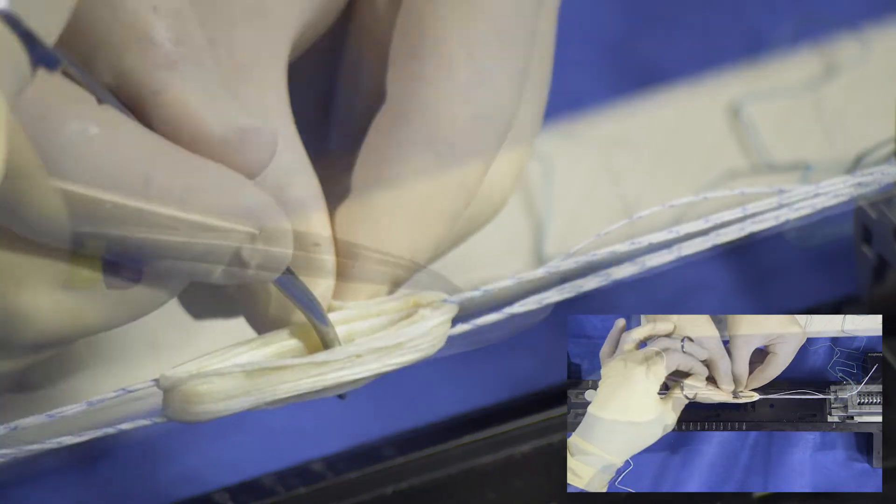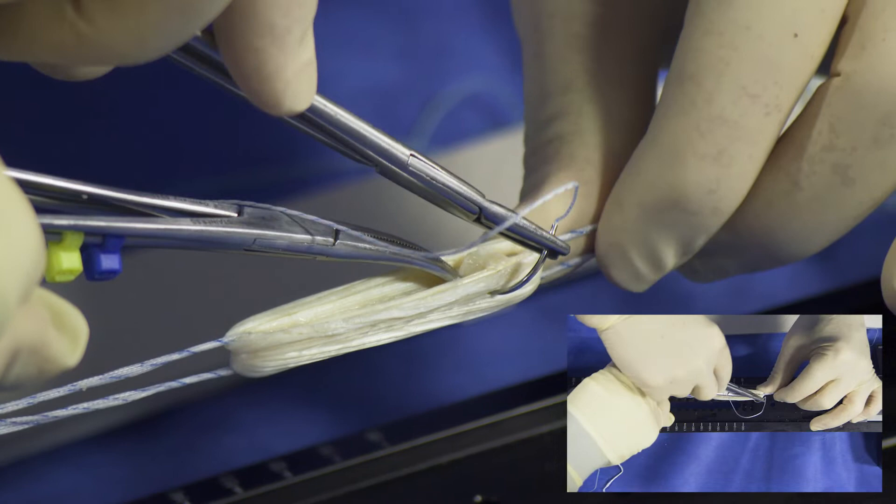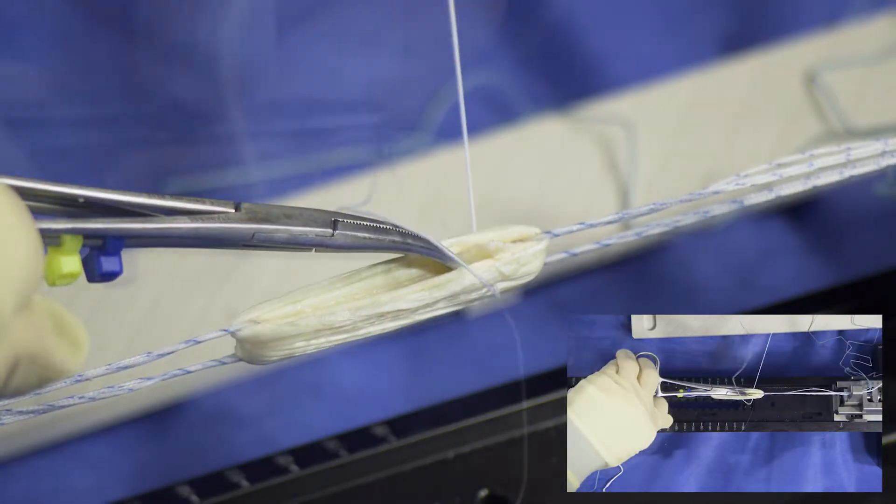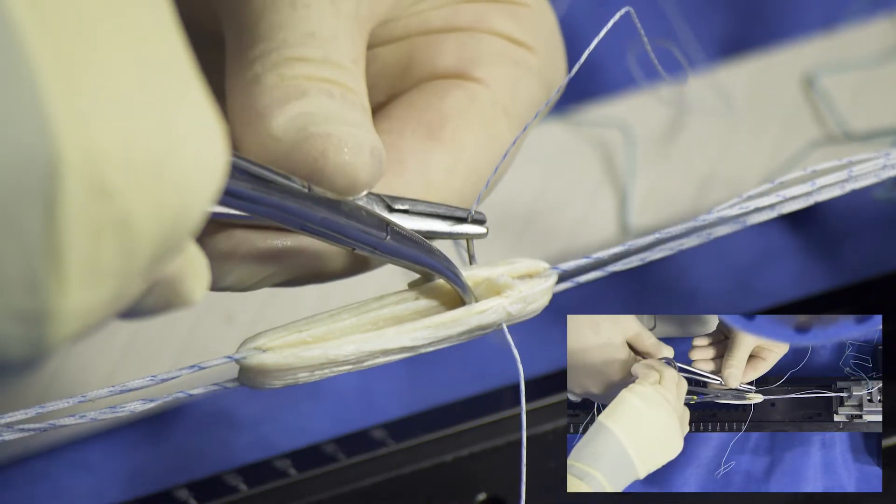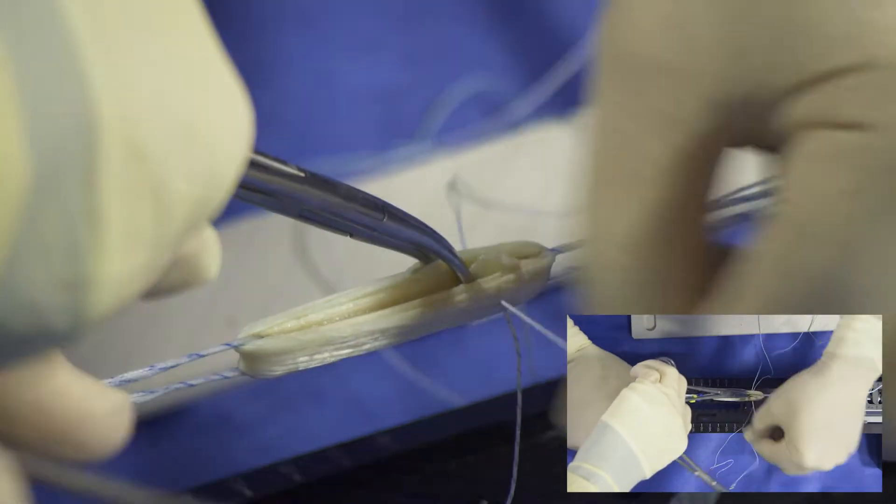The tendon is secured to itself with multiple 2-0 braided non-absorbable sutures. The goal is to keep the tendon from slipping on itself. The needle is passed through all six strands of tendon.